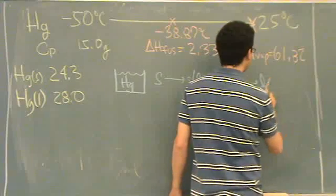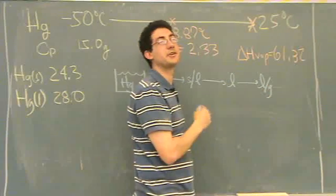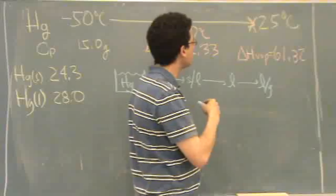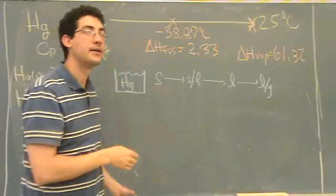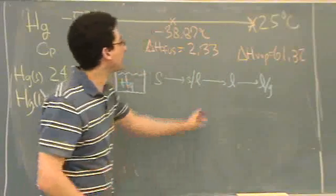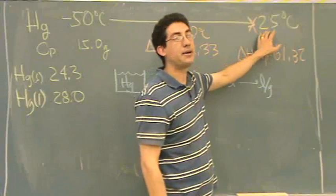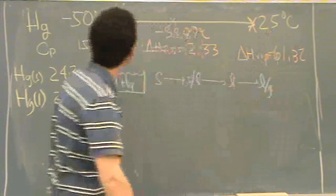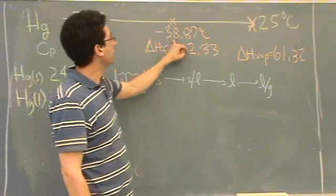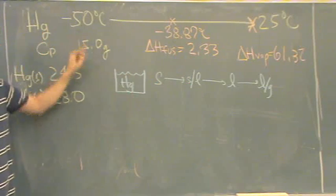Then you go through the liquid-gas vapor line, so it boils, and then it looks like we're not warming up the vapor at all, because the boiling point is at about 25, and here's the melting point, minus 38, and our start point, minus 50.